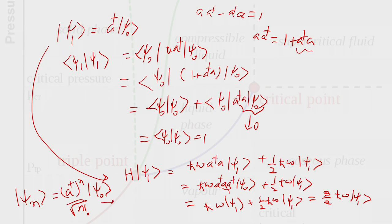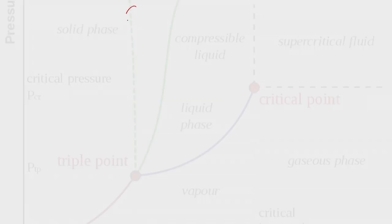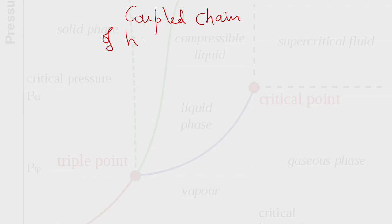The eigenvalue of the nth state is ħω(n + ½), because a†a has integer eigenvalues n. This is how you use the creation and annihilation operator approach to solve the harmonic oscillator. In the next topic, I will generalize this and consider a coupled chain of 1D harmonic oscillators.